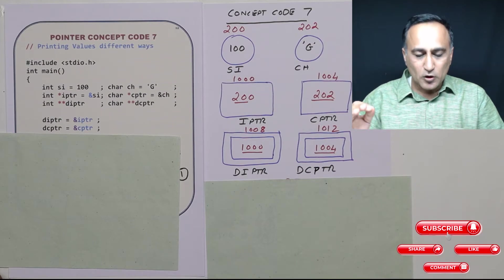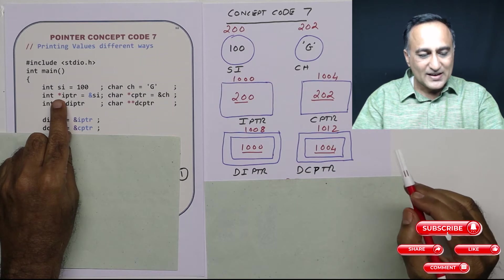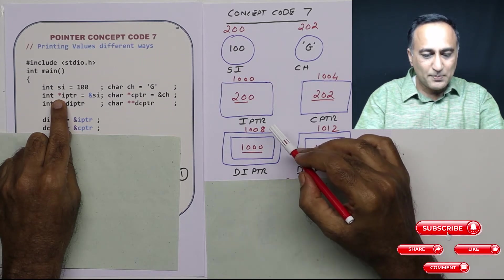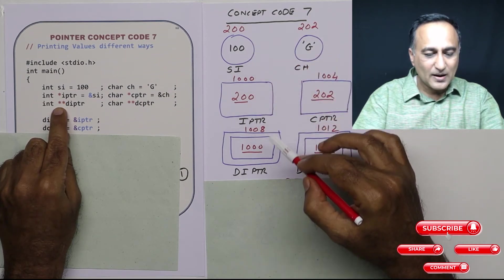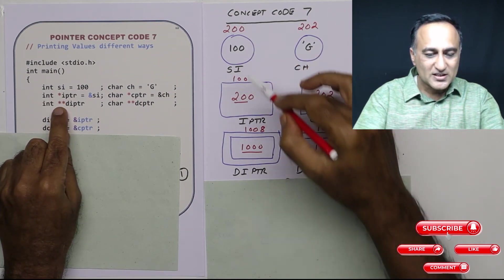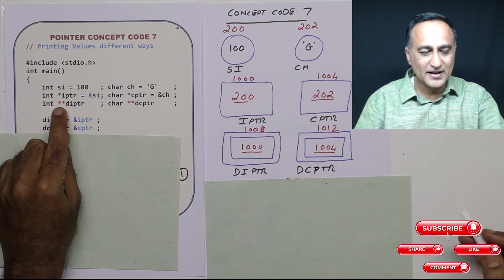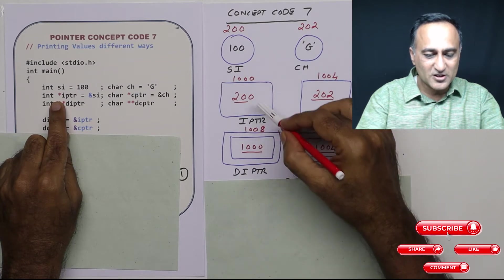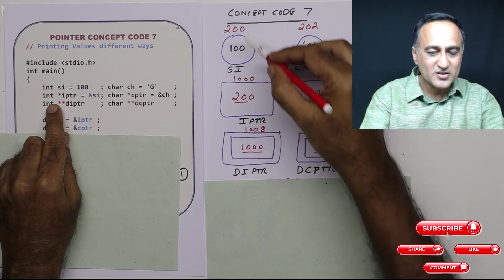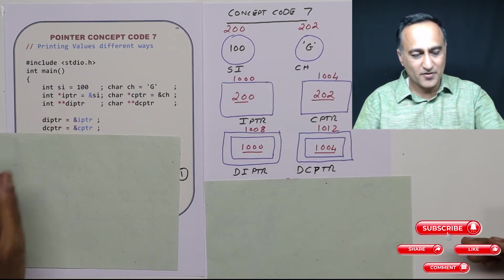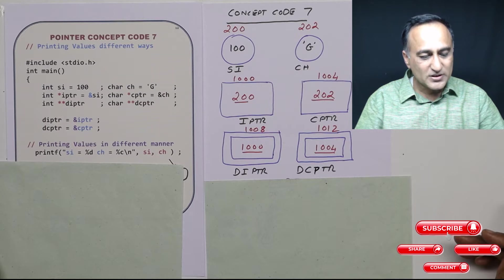The moral of the story is very simple. If it is a single pointer, star IPTR will give me 100. If it is a double pointer, two stars will get me to 100 — that is the only important thing you need to understand. The first star will give me address 200, and the second star will give me the value at address 200, which happens to be 100. So let's first try to print the values in different ways.